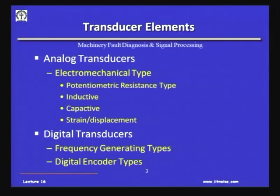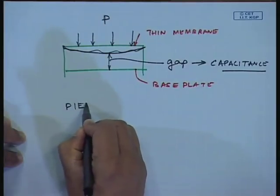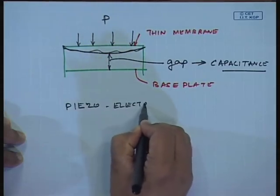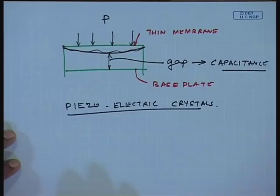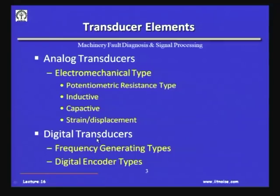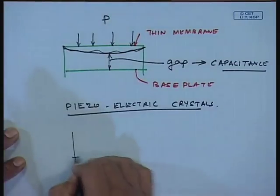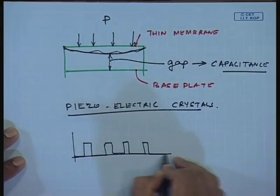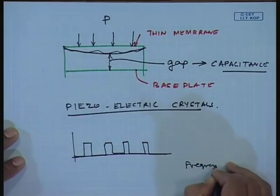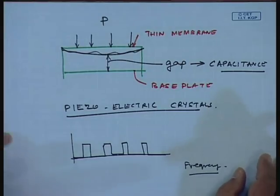Instead of strain gauges, piezoelectric crystals are also used nowadays. In CBM, some instruments use piezoelectric crystals as the sensing element. Digital transducers generate frequency-based or digital encoder-type outputs, generating a pulse train. By measuring the pulse width, we get the frequency estimation, and these are used in CNC machines, lathes, etcetera, to find out speed fluctuations.